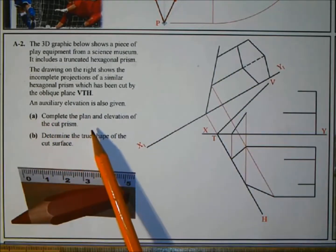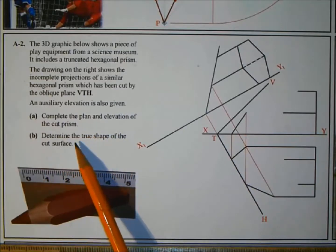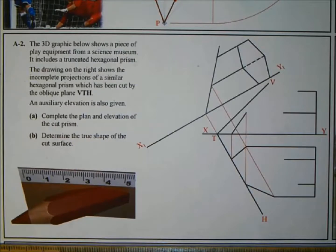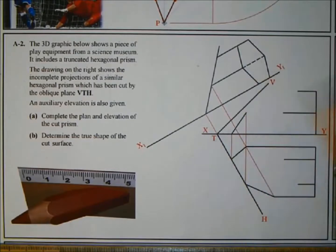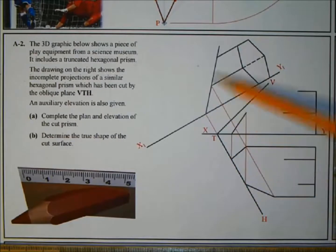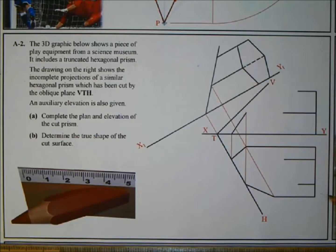Part A: complete the plan and elevation of the cut prism. Part B: determine the true shape of the cut surface. We're given parts of the elevation and parts of the plan, and it's from the auxiliary elevation that we complete them. The auxiliary elevation is projected around the same angle as the horizontal trace, giving you that angle.